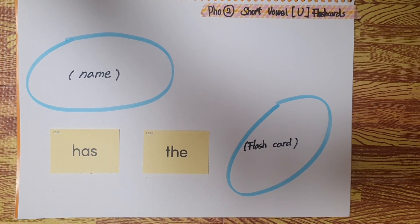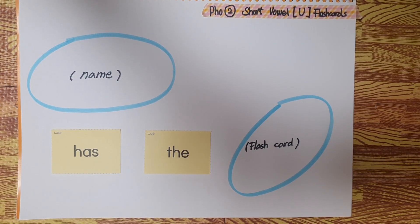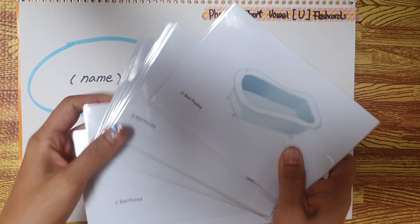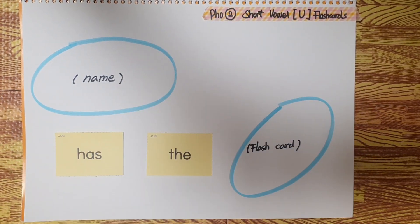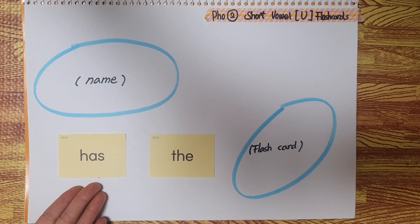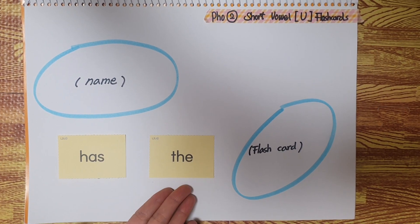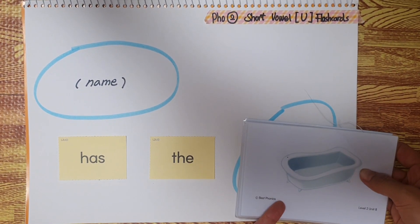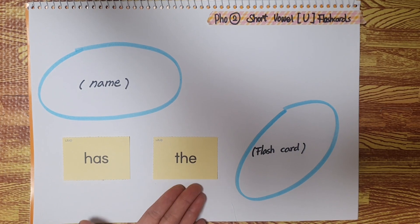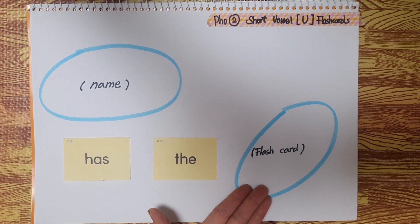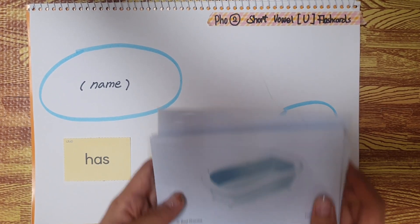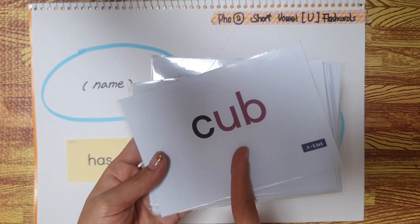Hi guys, today we're going to do a flashcards activity. Please take out the flashcards of unit 7 and 8. Alright, let's begin. Today we're going to use the letter side up.